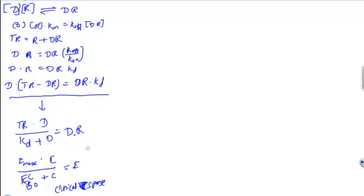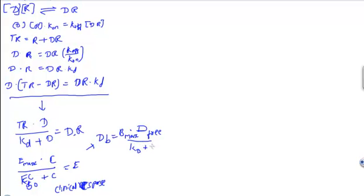The same equation can be rewritten for protein binding: DB equals Bmax — that is maximum bound — times DF, the free drug, divided by KD plus DF. This gives us the maximum bound.